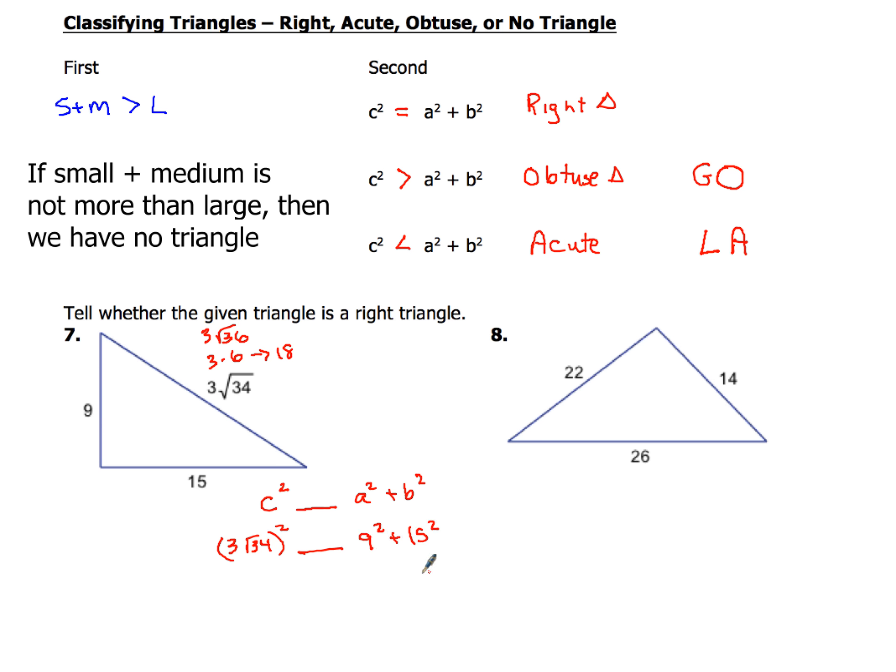Now, 9 squared and 15 squared, that's pretty easy to do. That part, 9 squared is going to give you 81, 15 squared gives you 225. So that is no big deal. But this is where sometimes people freak out and they're like, man, how do I do this?